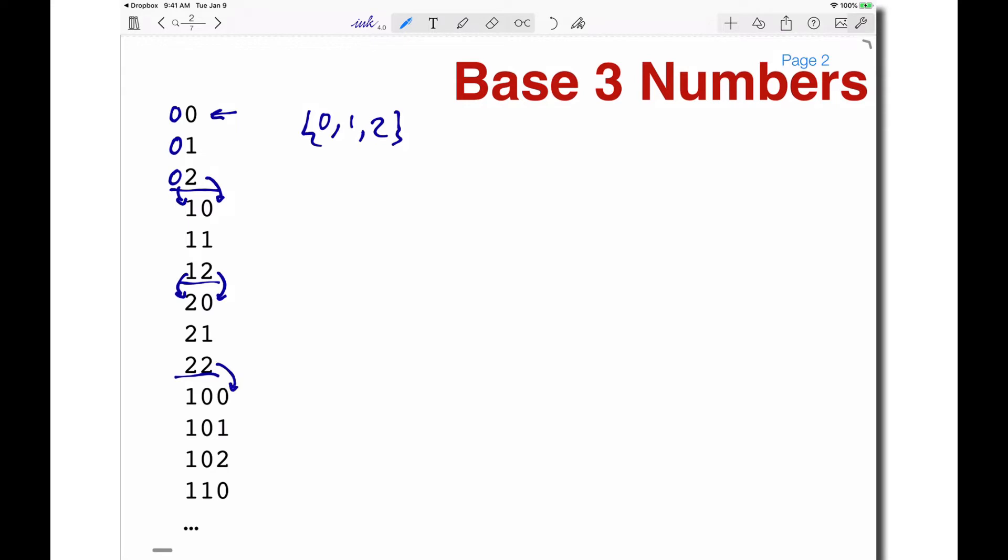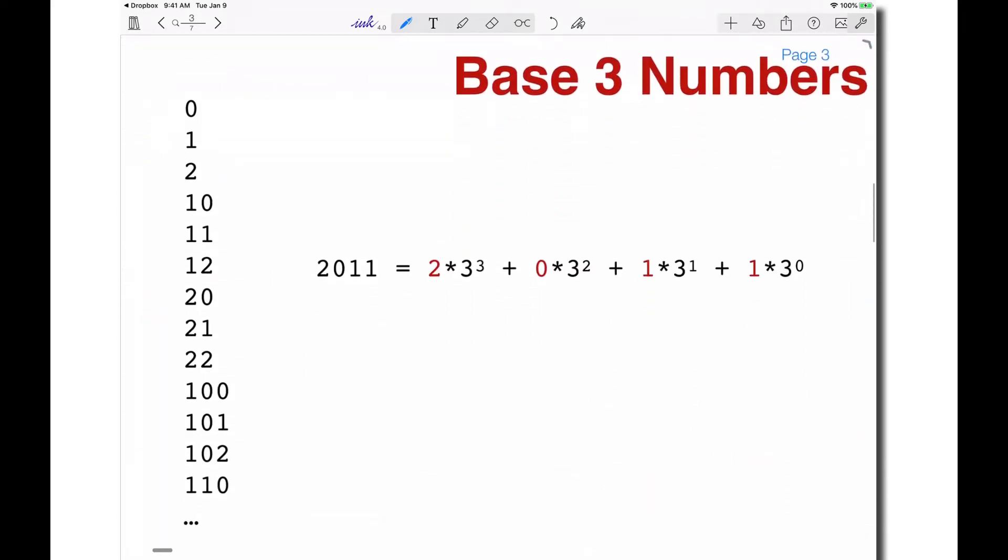At 22, both digits are at the end, so they become 0 and the digit in front becomes 1, giving 100. Then 101, 102, 110, and so on. After that would be 111, 112, and so on. That's a quick review of counting in base 3.